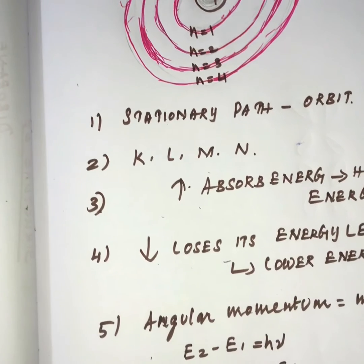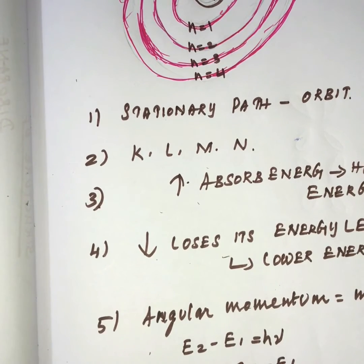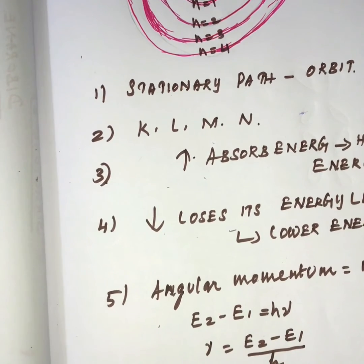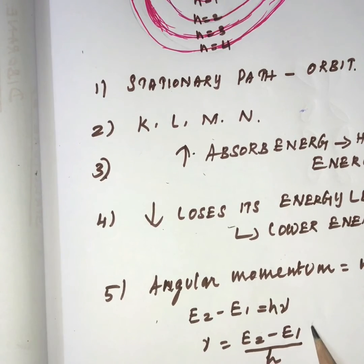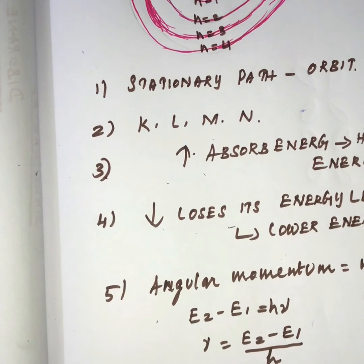The angular momentum is given by MVR = NH/2π, where N is the energy level, H is Planck's constant, and 2π relates to the angular momentum. The energy difference is calculated by E₂ − E₁ = hν, whereby the frequency ν can be calculated from E₂ − E₁.